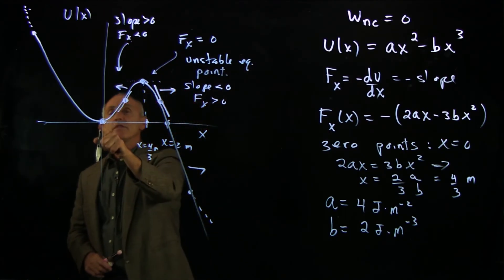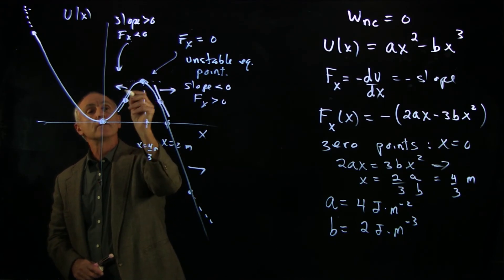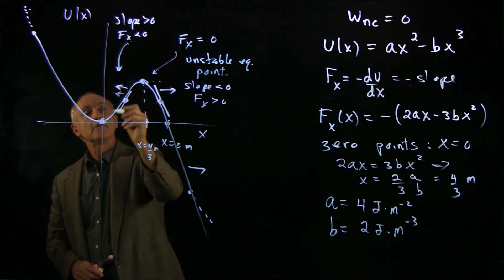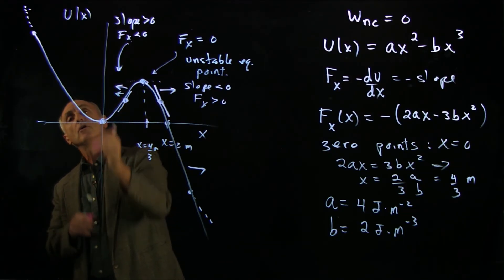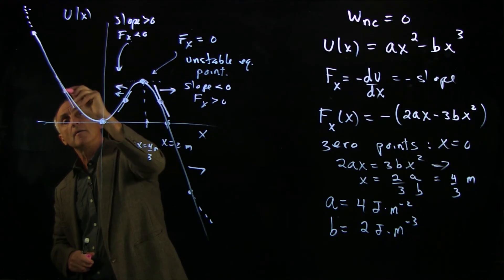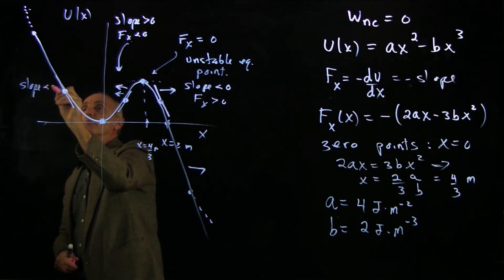What about this zero point over here? We already know that if a particle is on this side of the zero, it feels a force this way. But what if our particle were on this side? Once again, we analyze the slope. The slope is negative, force is minus the slope, so it's positive.